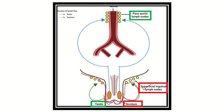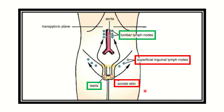On the other hand, the testes — the lymph nodes drain into the lumbar region. On either side of the aorta there is the para-aortic lymph node. So though the testes are located outside the abdominal cavity or pelvic cavity, it is important to remember that the lymphatic drainage occurs in the abdomen, which is the para-aortic lymph node. But the covering of the testes, which is the scrotum, drains into the superficial inguinal lymph node.